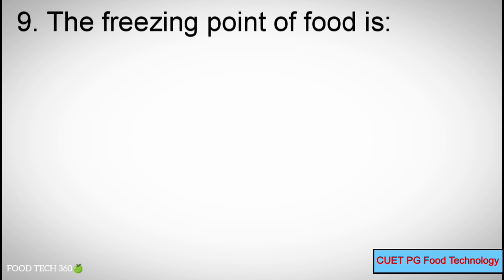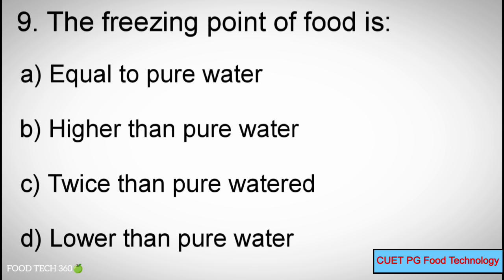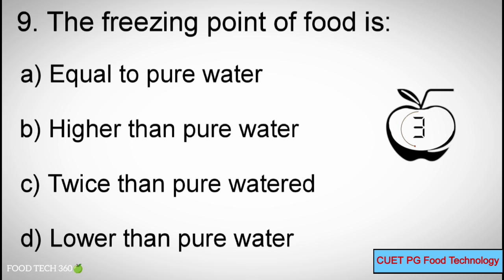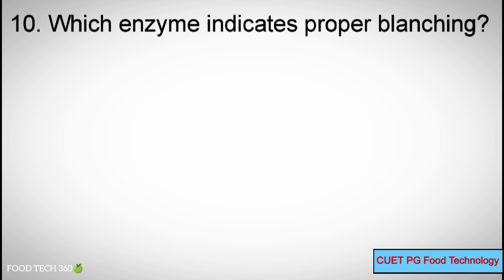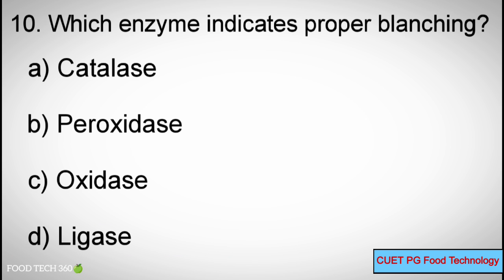Q9: The freezing point of food is — A. Equal to pure water, B. Higher than pure water, C. Twice that of pure water, D. Lower than pure water. Correct answer: D. Lower than pure water.